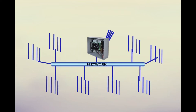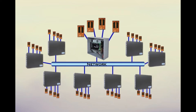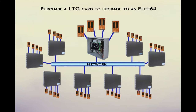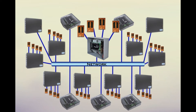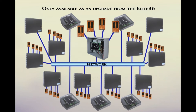If you have reached the maximum capacity of your Elite 36 system and need additional expansion nodes, you can purchase a license to go card to upgrade to an E3 Elite 64 model. This model allows for up to seven additional two-door or four-door expansion nodes, or ACMs, to be added for a total of 15 nodes. The E3 Elite 64 model is only available as an upgrade from the Elite 36 system through the purchase of a license to go card. It is not available to purchase directly as an end item SKU or model number at this time.